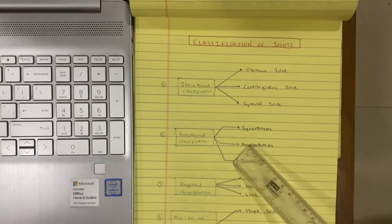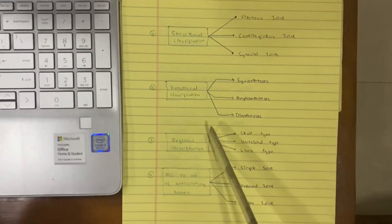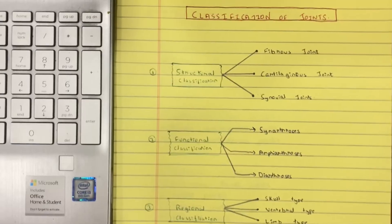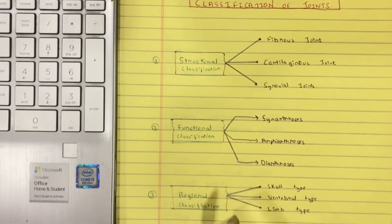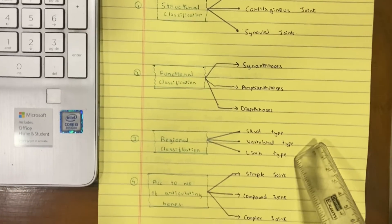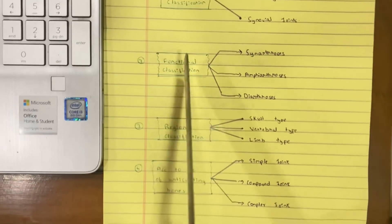Let us do the easy part first, which is the regional classification. The regional classification is divided into three types: the skull type, which is immovable; the vertebral type, which is slightly movable; and the limb type, which is freely movable. Now let us move on to the functional classification.